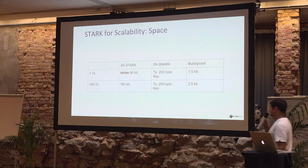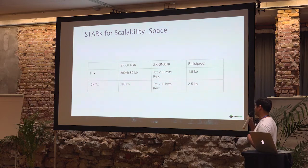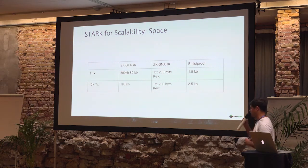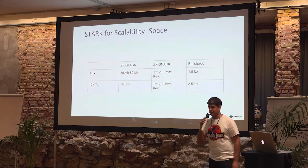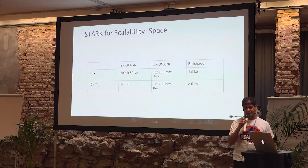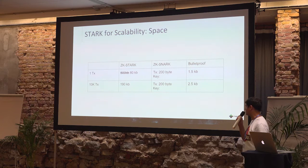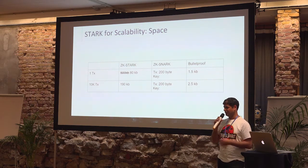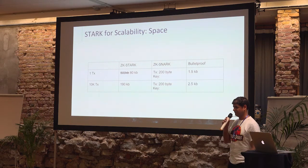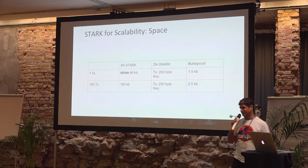Another comparison, this time on proof size. Here you can see STARK's main drawback — the STARK proofs originally from the paper are something like 500 kilobytes. We did manage in about 3-4 months of work to reduce this number to 80 kilobytes. I really hope, especially doing the product side, that we will be able to take this number down by another factor of 5 to 10, but it's just wishful thinking.